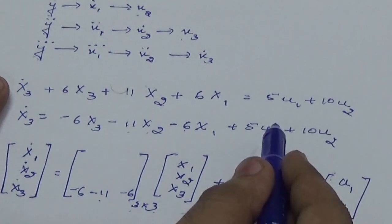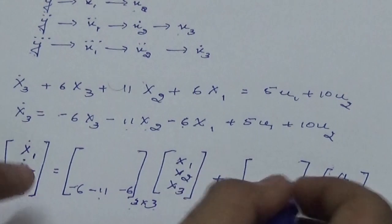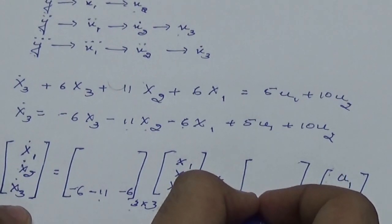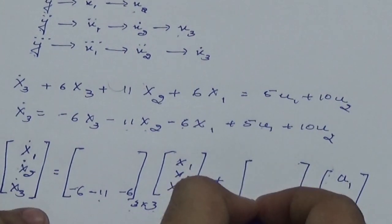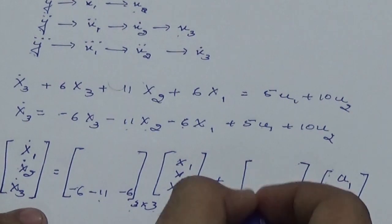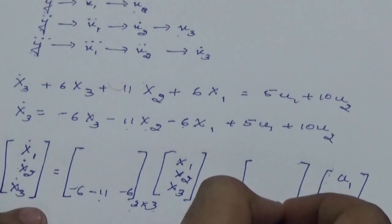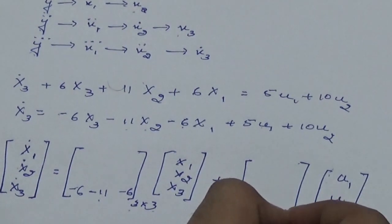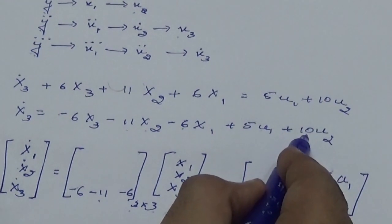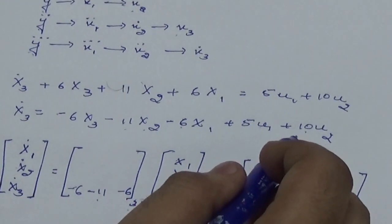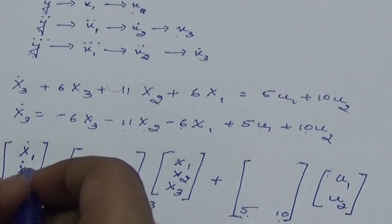Now x₃ dot is having the inputs u₁ and u₂, so therefore I know that when I multiply u₁ with this matrix I have to get it as 5u₁, so therefore I write 5 in the third row first column. And in the third row second column I write 10 because here 10 is there.